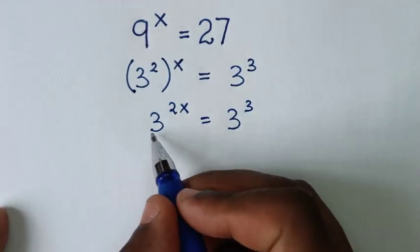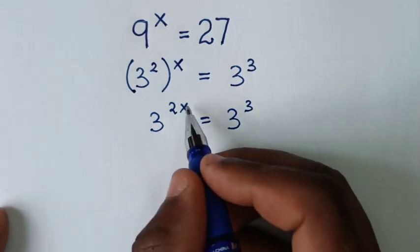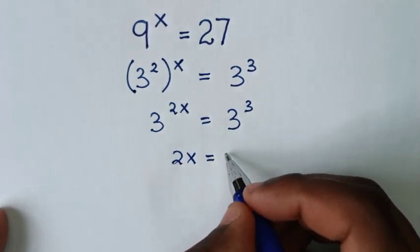Then in the next step, here we have same base of 3, so we'll compare these powers. So it will be 2x is equal to this 3.